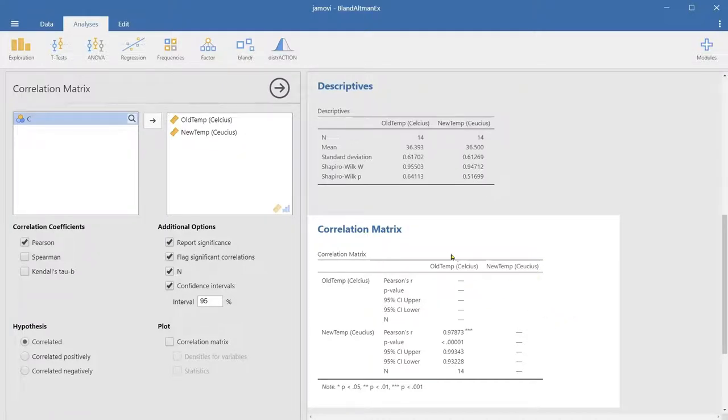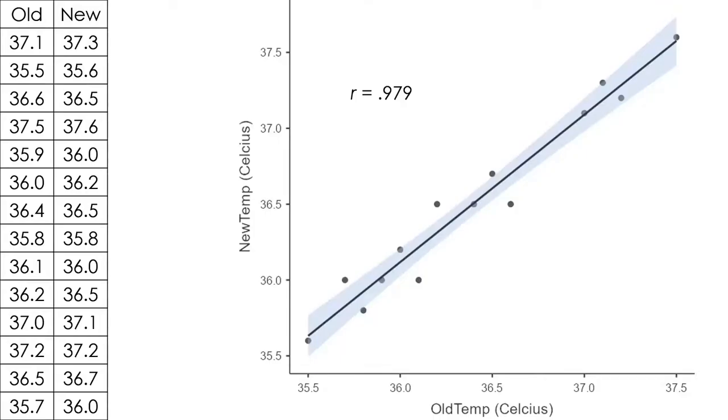So they are highly correlated. As we can see, the R value is very high, meaning that the two measurements are closely related. However, high correlation is not sufficient, even though necessary, to say that the two methods agree with each other for several reasons.